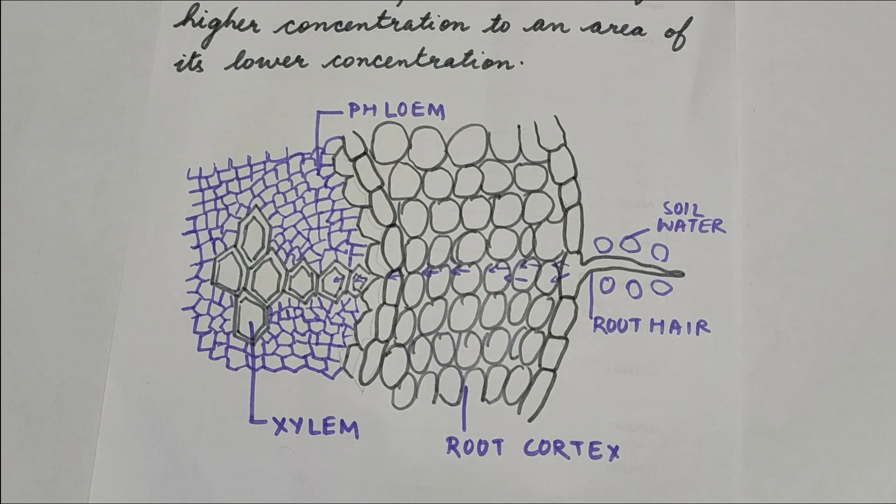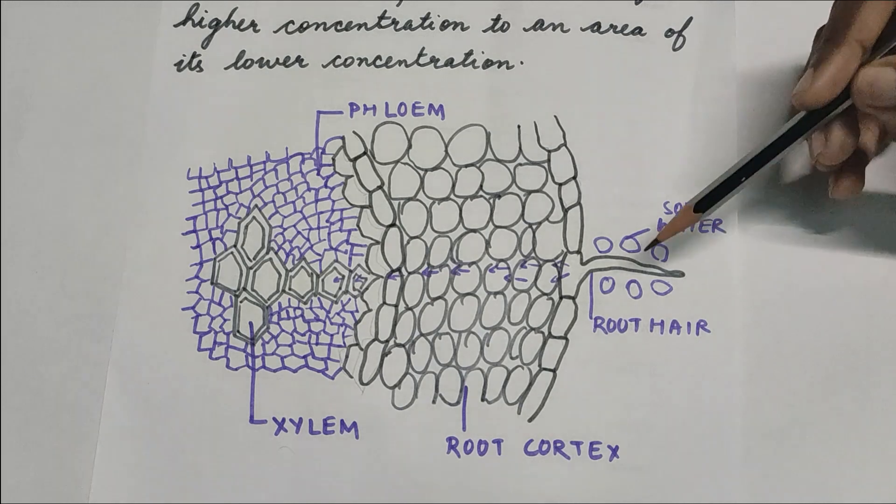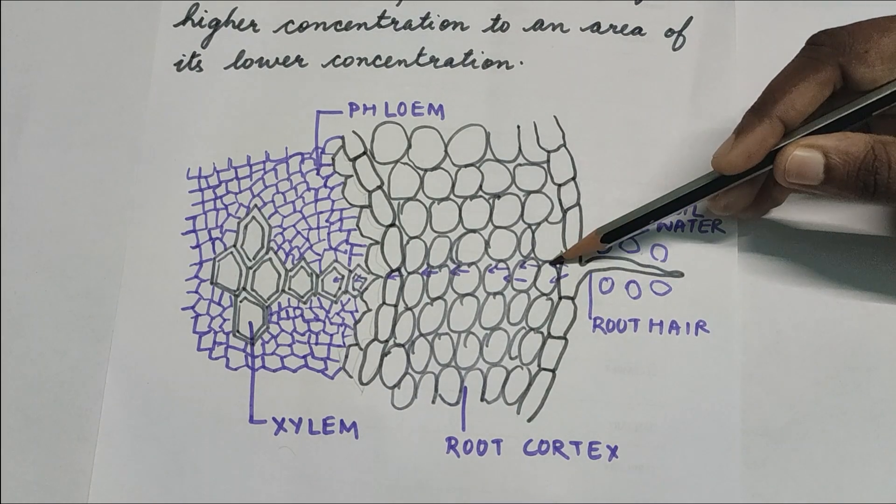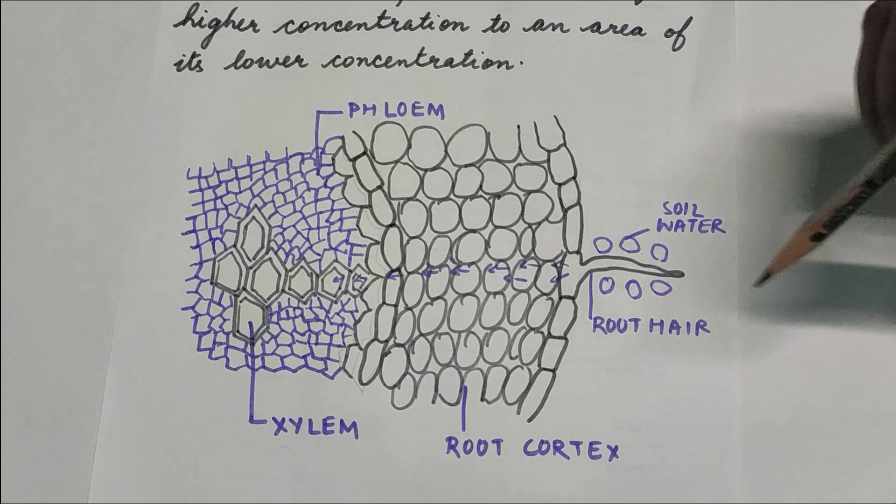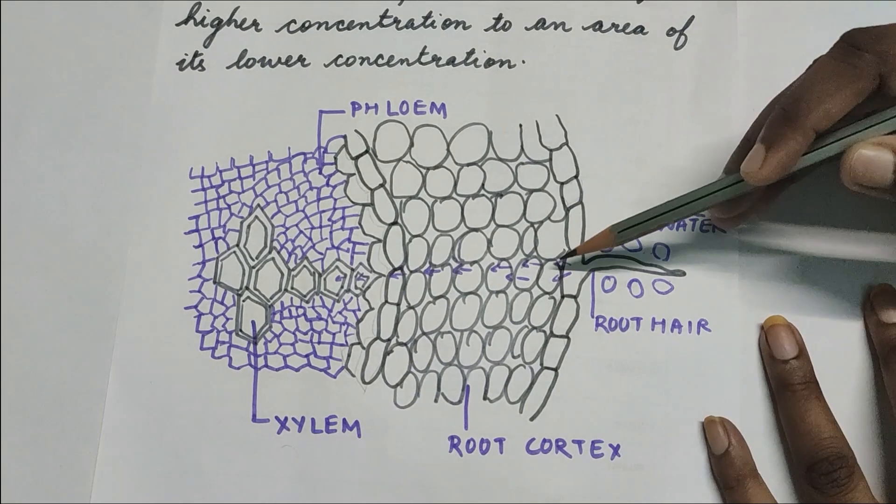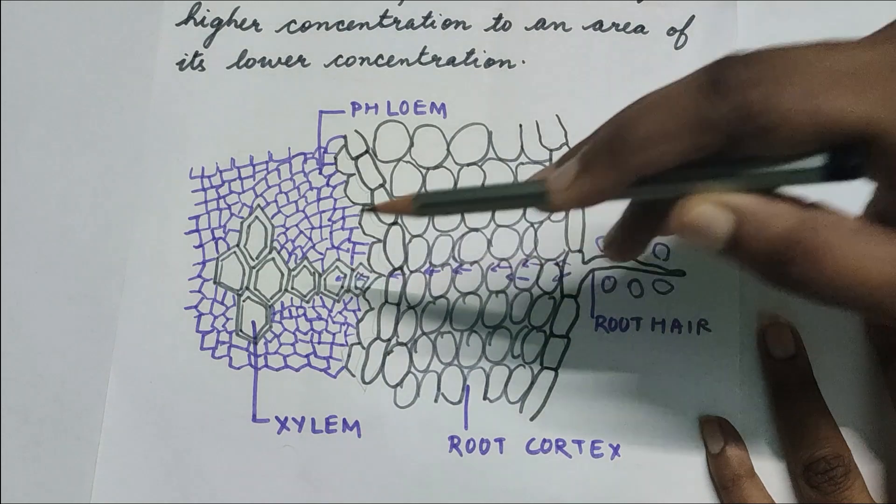So the water will start flowing from the soil to the root hair cells. The soil has higher concentration of water and the root hair cells have low concentration of water. This process is called osmosis. As you can see in this arrow, it is moving to the xylem.